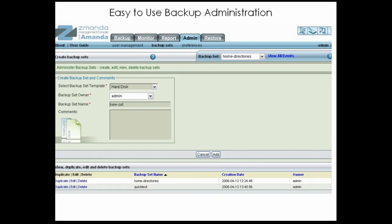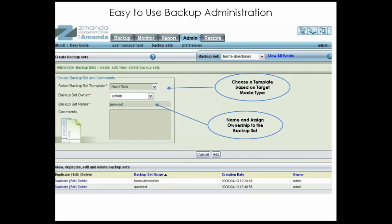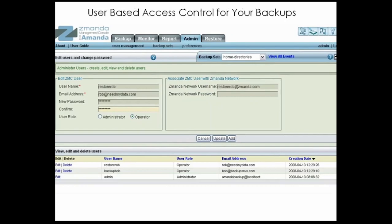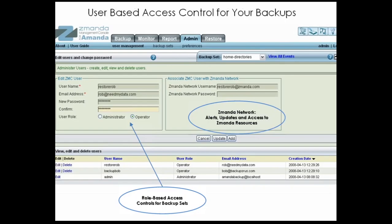Need to add additional backup sets? Click on Backup Sets on the Admin tab to create a new backup set from scratch, or to duplicate an existing backup set and make a few changes. You can also edit or delete existing backup sets on this page. AMANDA Enterprise provides role-based access control to provide privilege separation between administration and backup tasks. There are two levels of users: Administrators can see everything and have full privileges on the ZAMANDA Management Console, while Operators can only see and operate backup sets that they own. Each user can also be associated with their ZAMANDA Network account, which provides alerts, updates, and access to ZAMANDA resources including documentation, the knowledge base, and support.